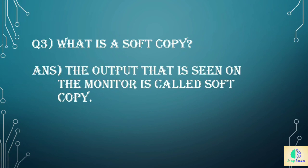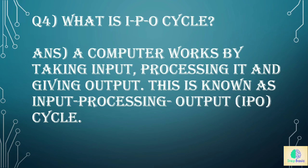Question: what is a soft copy? Answer: the output that is seen on the monitor is called soft copy. Question: what is the IPO cycle? Answer: a computer works by taking input, processing it, and giving the output. This is known as the input processing output, or the IPO cycle.